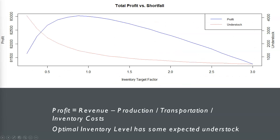We can also see that the optimal profit point requires some possibility of understock. Trying to avoid being understocked increases inventory costs to the point where it's counterproductive to profit.